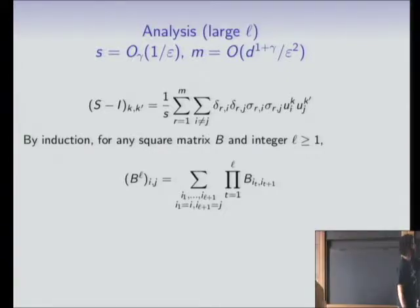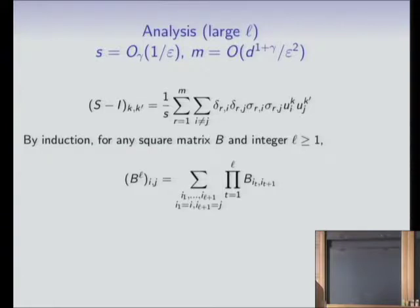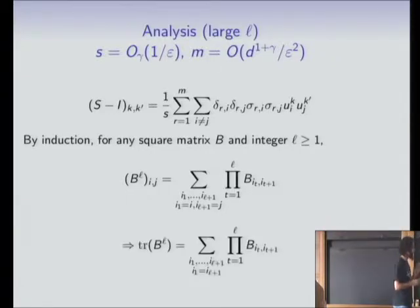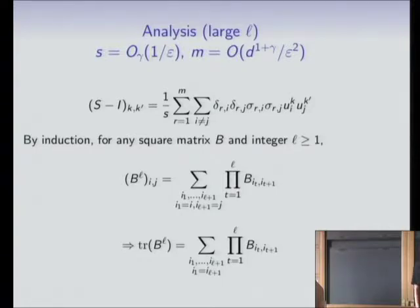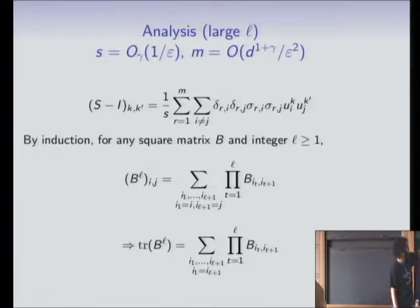For larger L, some basics: if you take any square matrix and raise it to a power L, the (i,j)-th entry is the sum over all paths of length L from i to j of the product of all matrix entries along that path. This implies the trace equals the sum over all closed paths (i_1 equals i_{L+1}) of the same product. We just apply this where the matrix is S minus I — a D-by-D matrix.